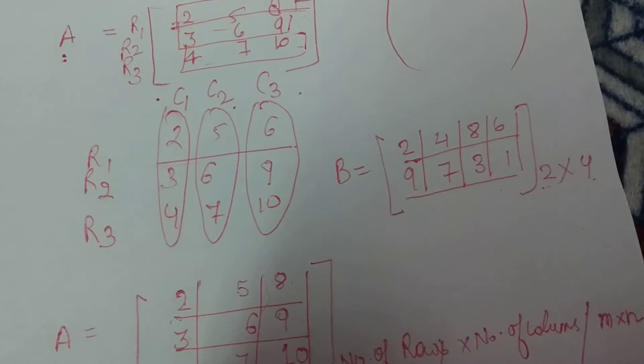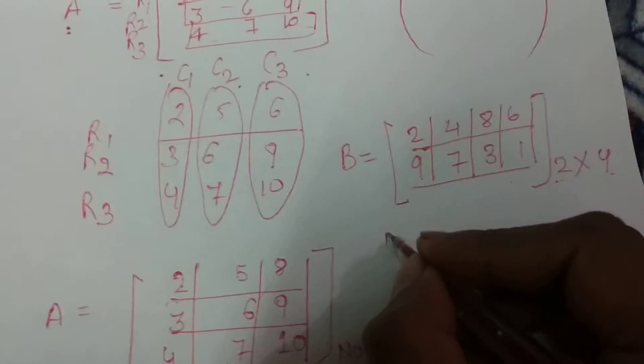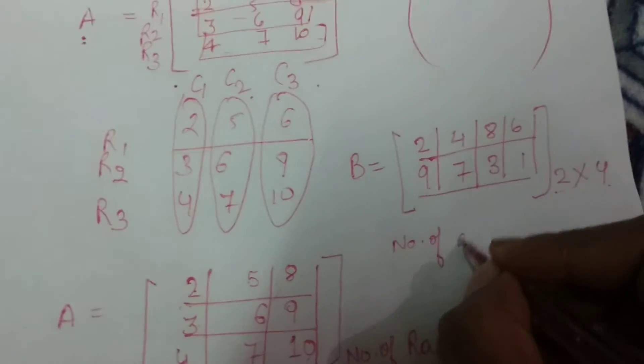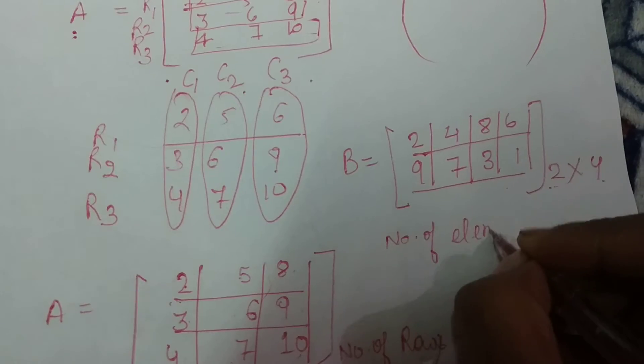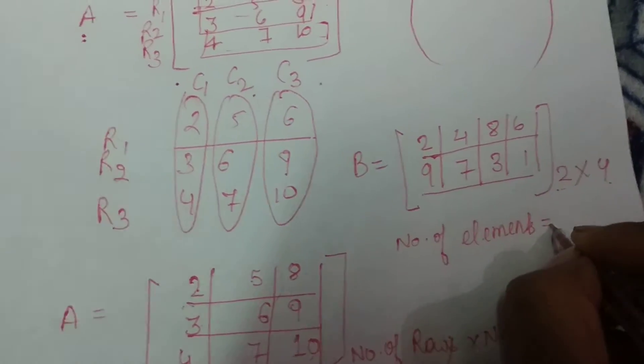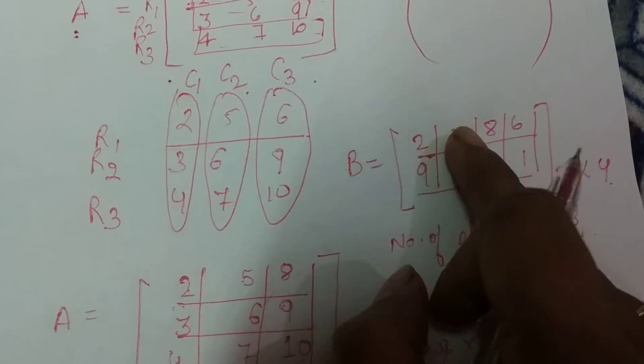If we count the number of elements for this 2 by 4 matrix, we multiply 2 by 4 to get 8. So there are 8 elements in this matrix.